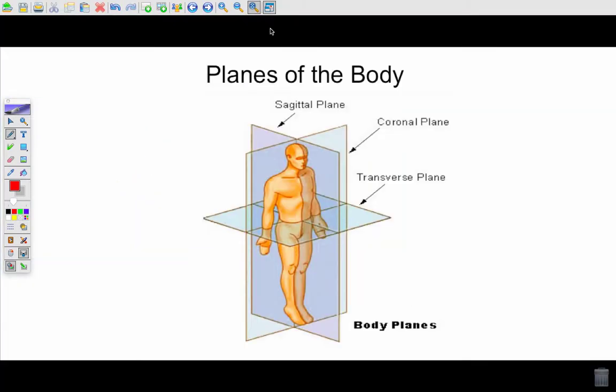For this next part we're going to look at planes of the body and these are imaginary ways that we divide the body up in two. So the first one we're going to talk about is the sagittal plane and the sagittal plane divides the body into left and right portions.